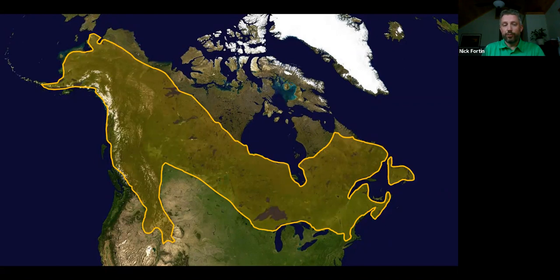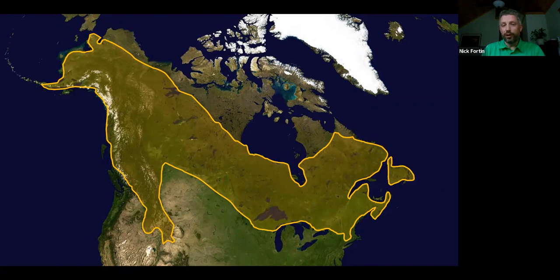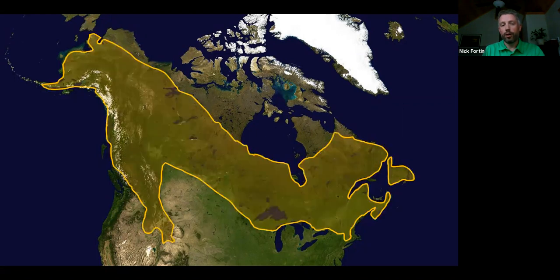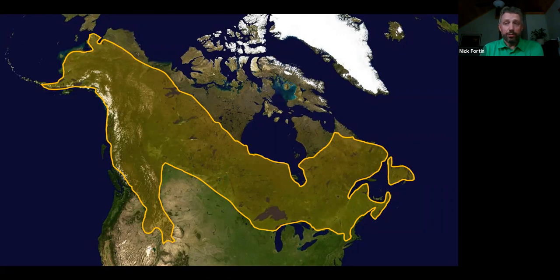This is the range of moose in North America. The dark green area is the boreal forest, and the overlapping area shows current moose range. Moose are strongly tied to that boreal forest — they're adapted to it.